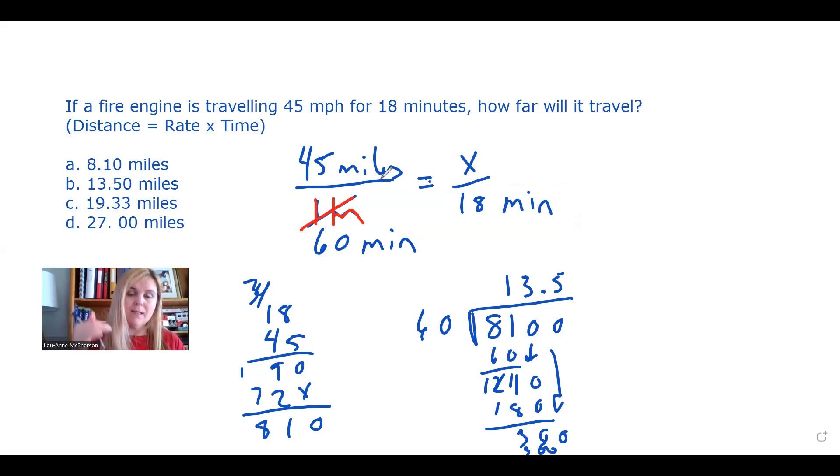Okay, miles over minutes equals miles over minutes. From there, you cross multiply your two known numbers, which is 45 times 18. That gives you the 810 that you had.